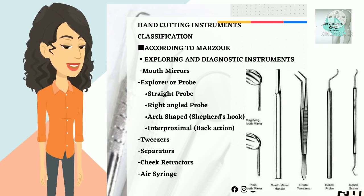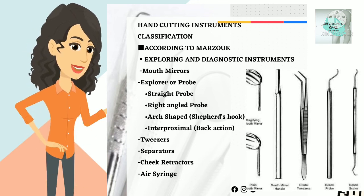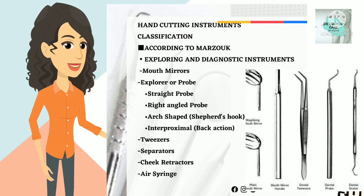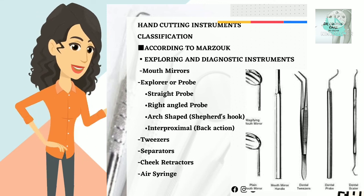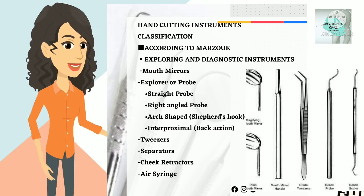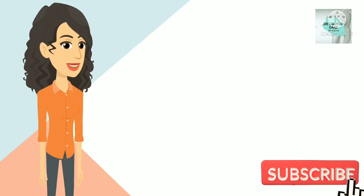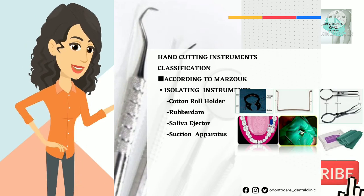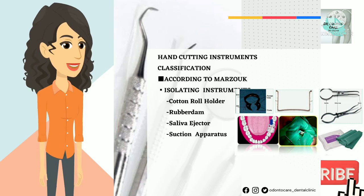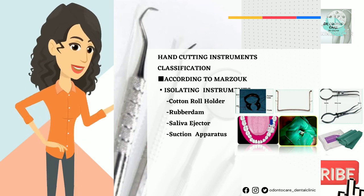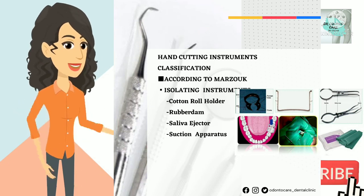According to Mozak, hand instruments are classified as follows. Number 1: Exploring or diagnostic instruments — mouth mirror, explorer or probe, tweezers, separators, cheek retractors, and air syringe.